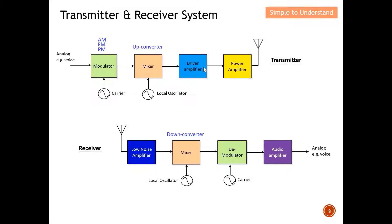After the mixer comes the amplifier. The amplifier pulls up the signal large enough before it is sent to the antenna for transmission. This is very essential — I must ensure that the amplifier boosts the signal to a sufficient level before it is sent to the transmitting antenna. At the transmitter antenna, the electrical signal is converted into an electromagnetic wave.